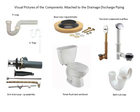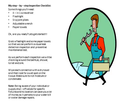Here you have visual pictures of the components attached to the drainage discharge piping. You see the P-trap, the bowl wax ring and bolts, tub drain waste and overflow, an S-trap, a sink drain pop-up assembly, a toilet flush tank and bowl, and the bathtub trap.